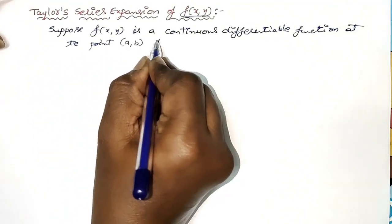Then the Taylor series expansion about the point (a, b) is: f(x, y) equals — the very first term in the expansion is f(a, b), that is the function value at the point (a, b), plus 1 by 1 factorial, whole into (x minus a) into f_x at (a, b).